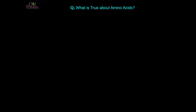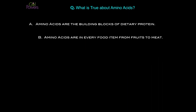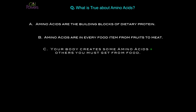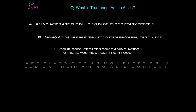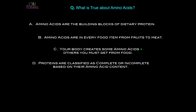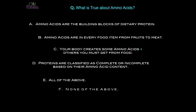What is true about amino acids? Amino acids are the building blocks of dietary protein. Amino acids are in every food item, from fruits to meat. Your body creates some amino acids and others you must get from food. Proteins are classified as complete or incomplete based on their amino acid content. All of the above — and as usual, you are correct, all of the above.